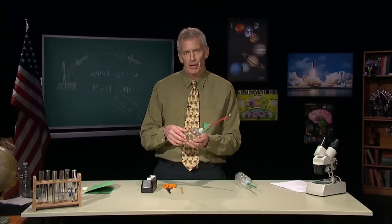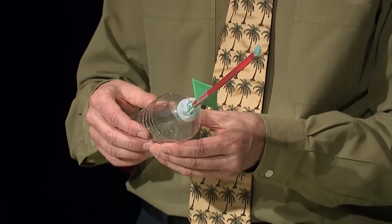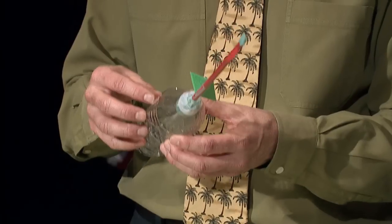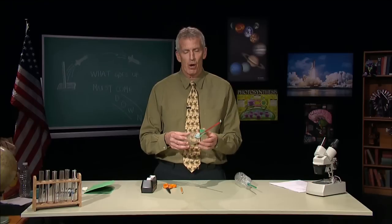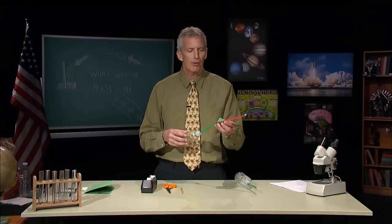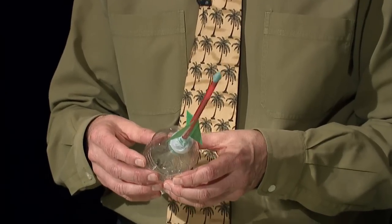The force is me pressing on the bottle. The opposite force is the bottle pressing back on me. Then the air inside the bottle is being pressed on and it pushes back on the rocket so that the rocket takes off.